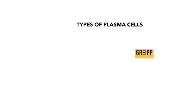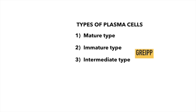Greif classified plasma cells on the basis of morphology into four types: the mature type, the immature type, the intermediate type, and the plasmablastic type. Plasmablastic cells are large cells having a central nucleus and a high N:C ratio. They have fine chromatin rather than coarse chromatin and also have a prominent nucleolus. The perinuclear hof is absent in the plasmablast.